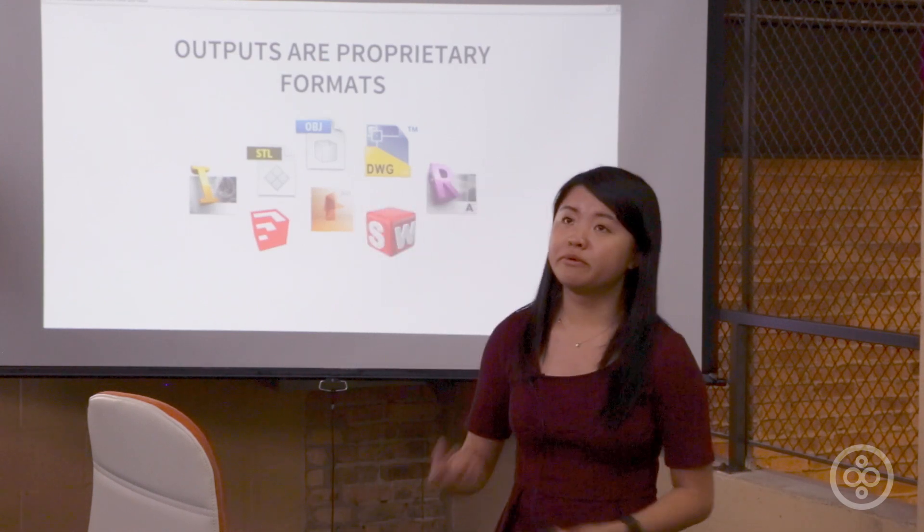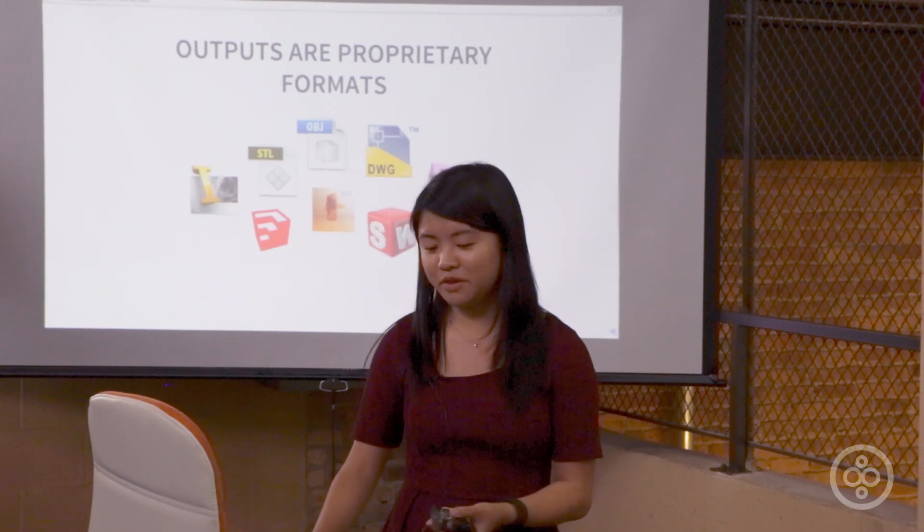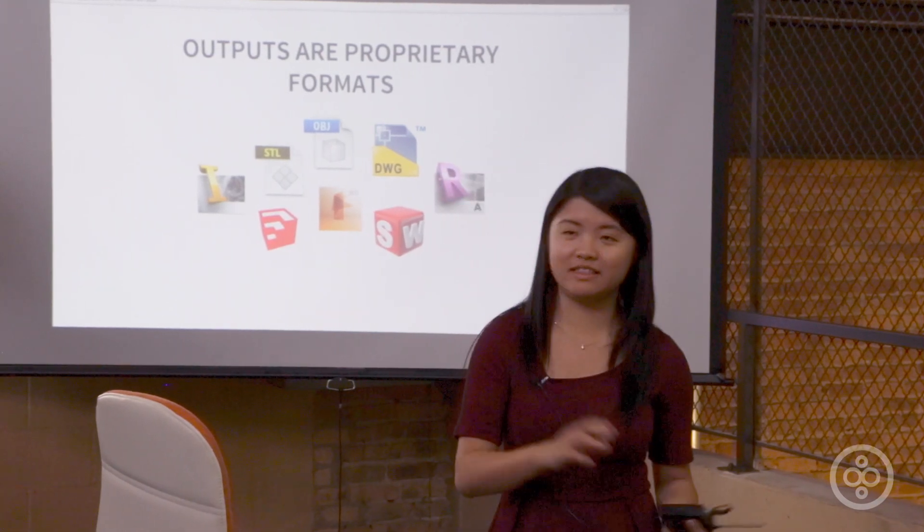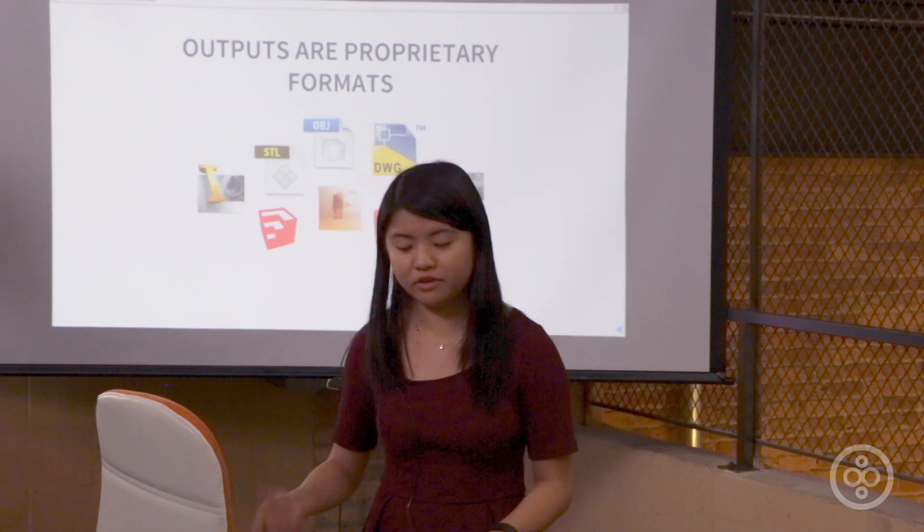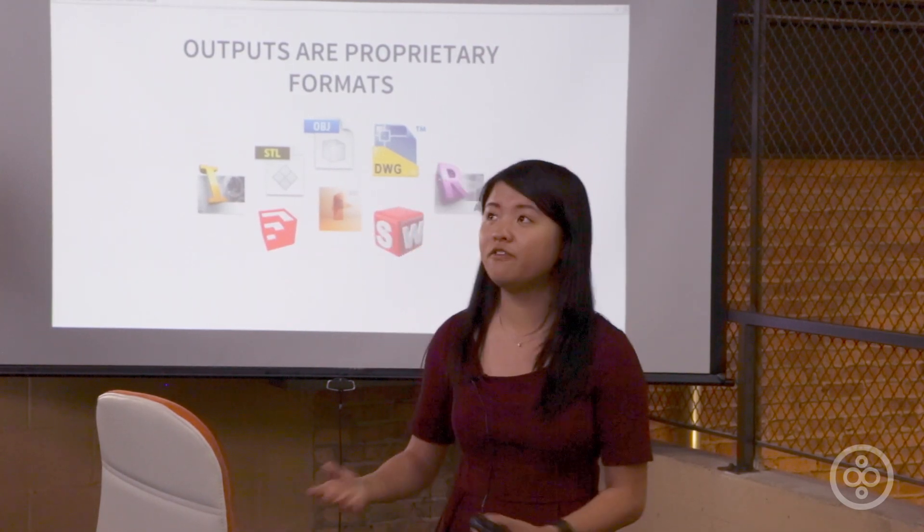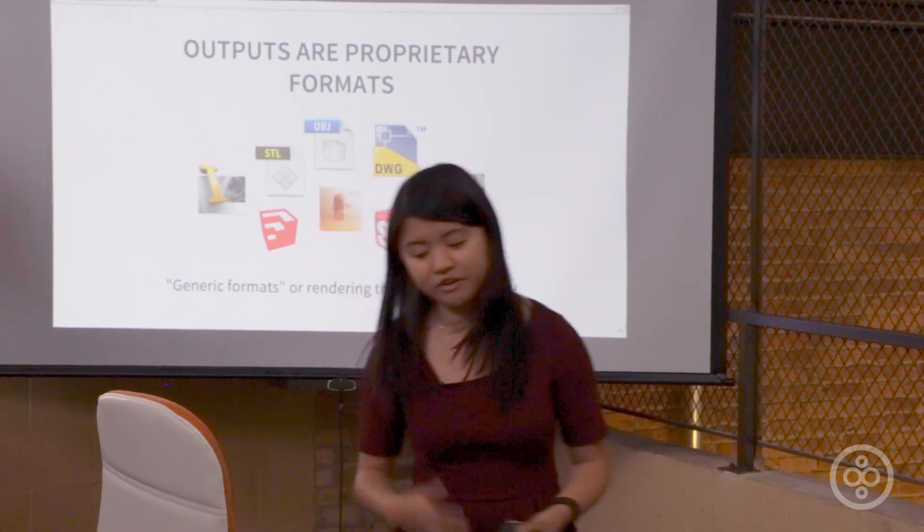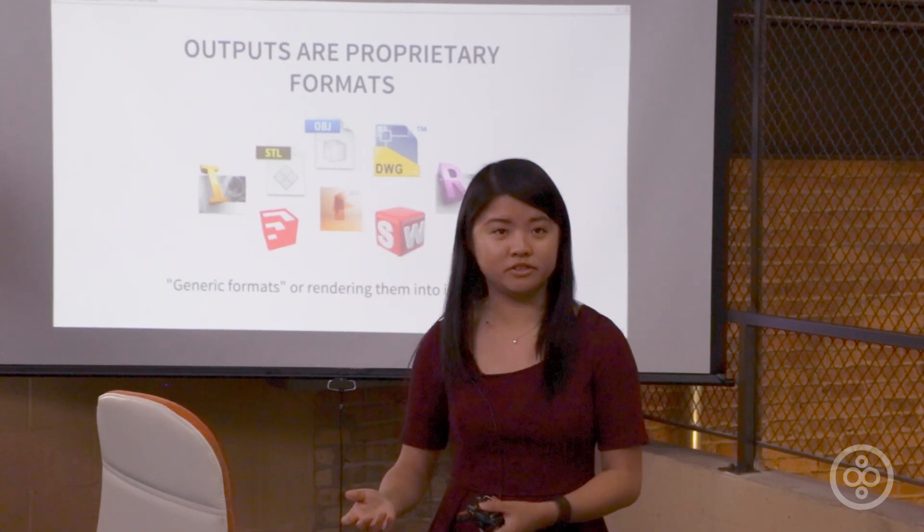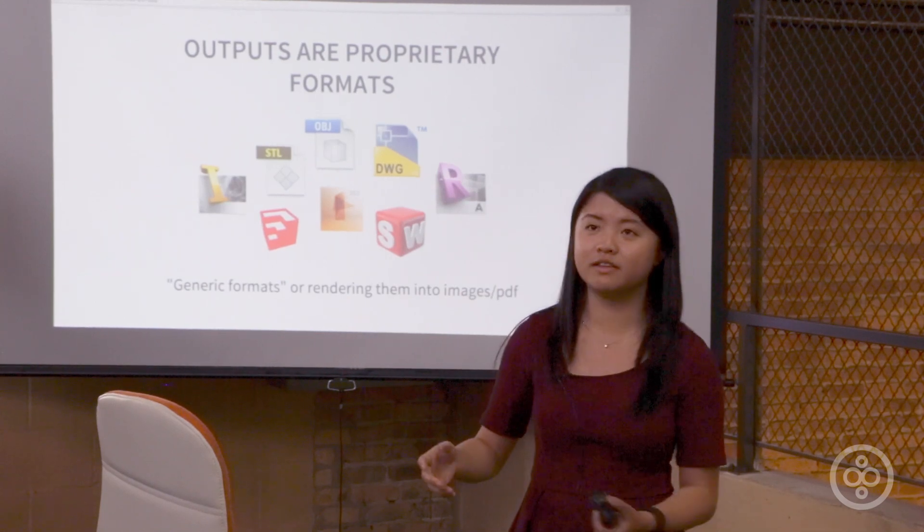And the outputs are very proprietary formats and you get these kind of STL or OBJ that are kind of generic, but it's still different for everybody and you still need a very specific software to open the file. So you have generic formats or you render it into an image. If you design a building, you can render the look of the building, you can get the floor plan. However, you could have just drawn the floor plan and not designed the building with the software. So what's the point? The problem with generic formats is that they're extremely lossy. They lose metadata like quantity, width, and height. And if you render the image, it's 3D into 2D. You could have drawn it.